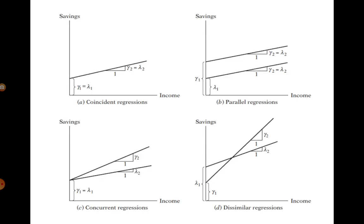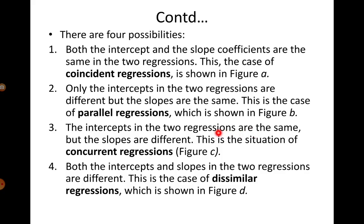The diagram for parallel regression shows that it is only the intercept that has changed. Since the slope remains the same, the two functions are represented by two parallel lines — one line representing the pre-liberalization period before 1991 and the other representing the savings-income function post-1990-91. It is also possible that the intercepts of the two regressions remain the same but the slopes are different. In such a case, we call it concurrent regression.